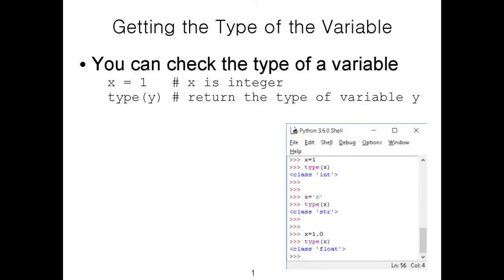You can use the type() function to check the type of an existing variable. If you're unsure about the type of a variable, you can pass it to the type() function and it will return the variable's type. This is useful when your program is running long and you've forgotten the type, or when you want to confirm the type before performing an operation on a variable.